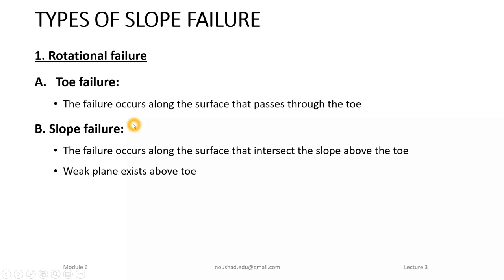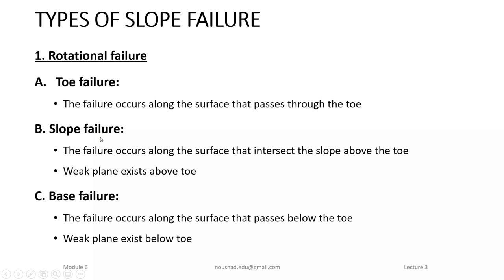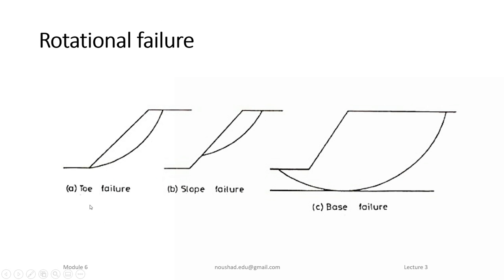Slope failure occurs when the failure surface cuts the slope above the toe — this happens when the top soil is weak and the base is strong. Base failure occurs below the toe when a weak soil layer exists beneath the slope; the failure surface passes through that weak plane below the base.